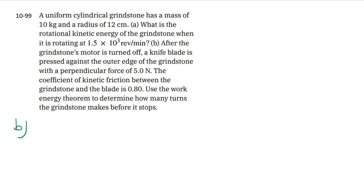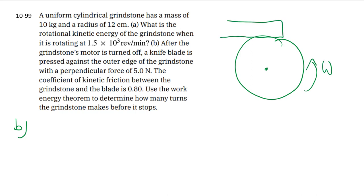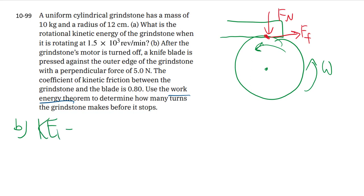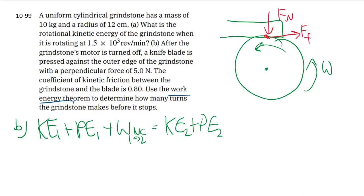For part B, we're given the wheel rotating, and we press against it with something, so there is a normal force. Since the wheel surface moves to the left at that contact point, friction must point to the right. Now that there are forces at play, we can talk about the work involved, which is why they ask us to use the work-energy theorem — a fancy name for the full energy balance equation.